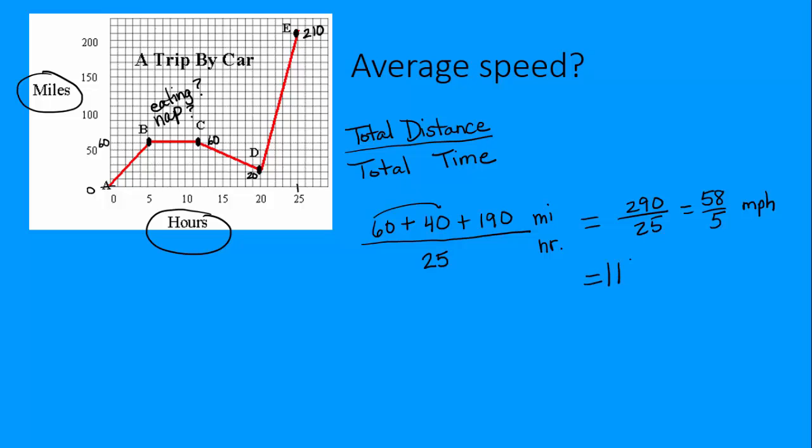That would be 11 and three fifths miles per hour. Now we can start to picture this. An average speed of only about 11 miles per hour, that's pretty slow as an average. You can also change that to an exact decimal equivalent, 11.6 miles per hour. Either answer totally fine with me.